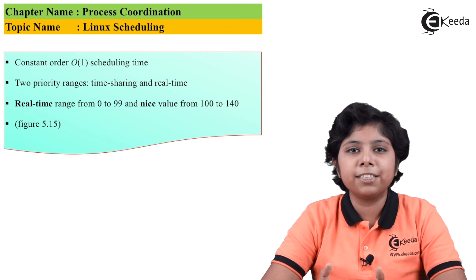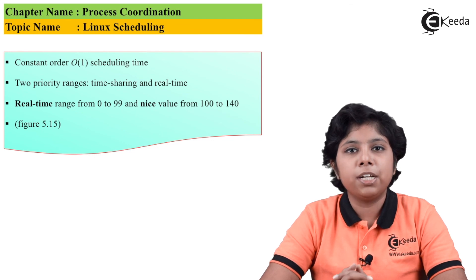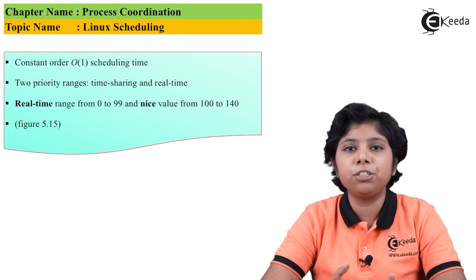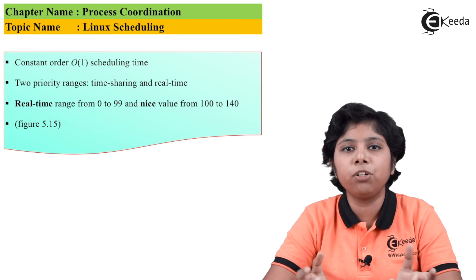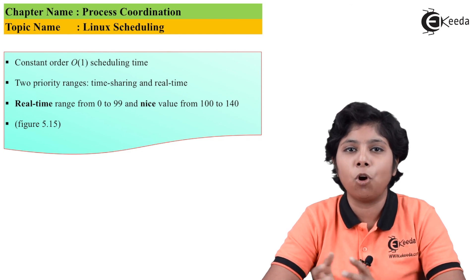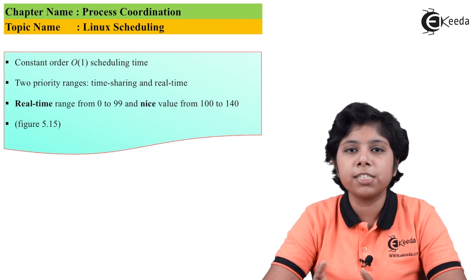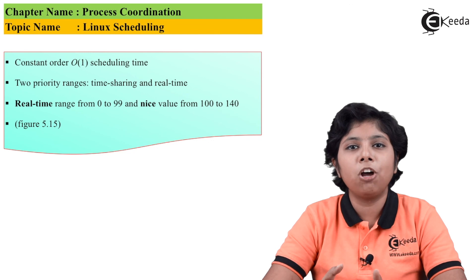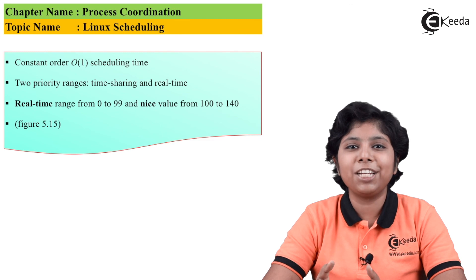Normal tasks are assigned priorities based on their nice values. The nice values from minus 19 to plus 20 are mapped to the priority range of 100 to 139 for the normal class. In this way, Linux scheduling is accomplished using CFS along with the O(1) algorithm and the virtual run time policy. Thank you for watching this video — stay tuned with Ekeeda and subscribe to Ekeeda.